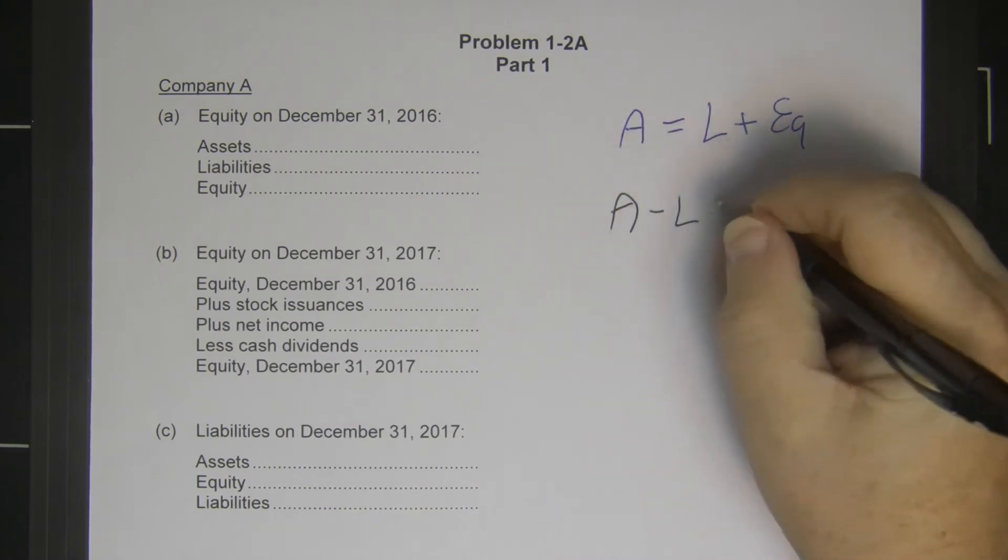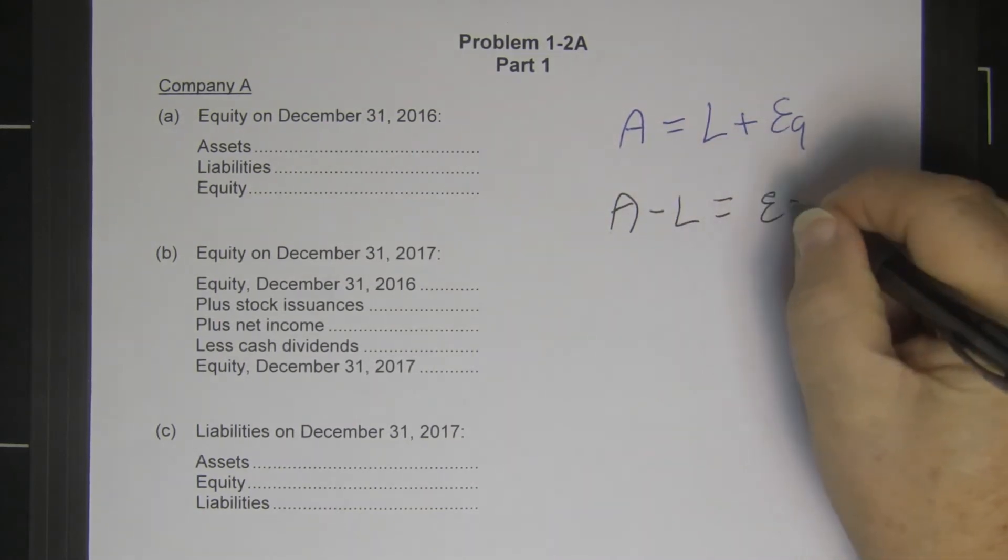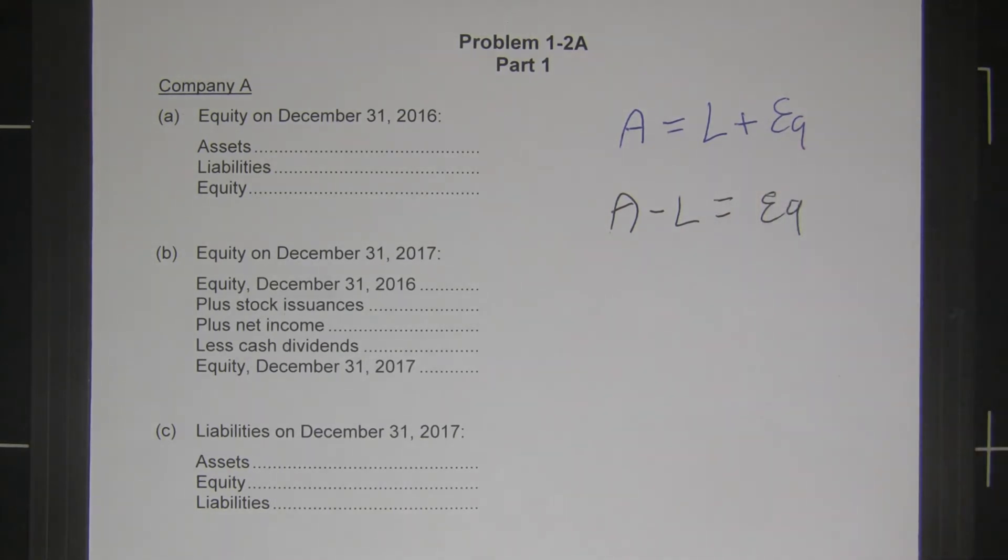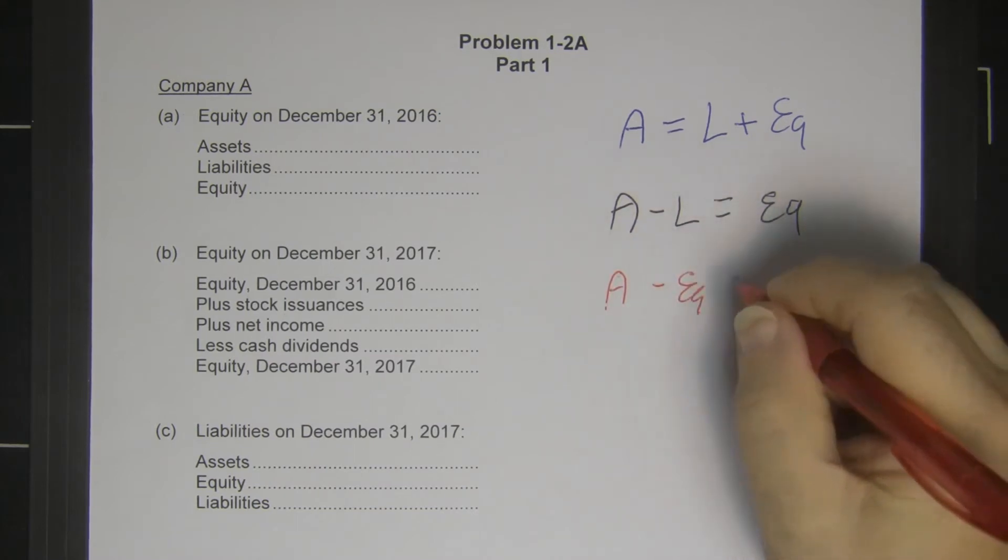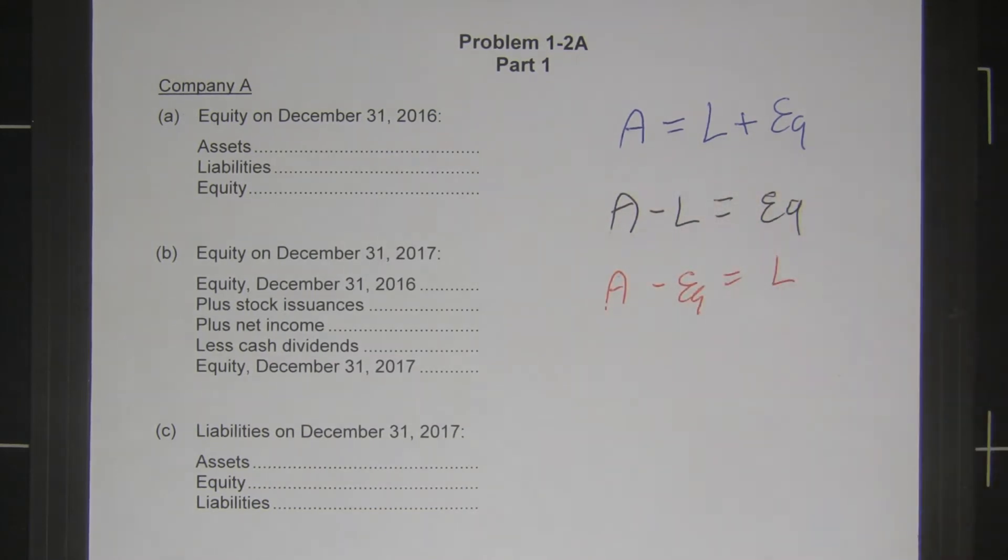Assets minus equity equals liabilities. This problem asks us to use all of those variations.